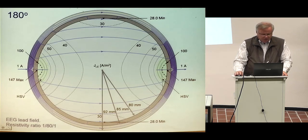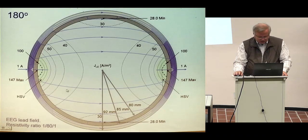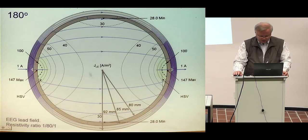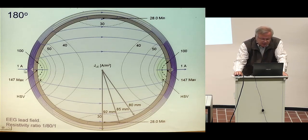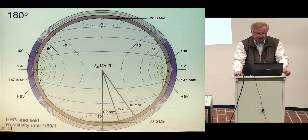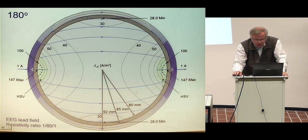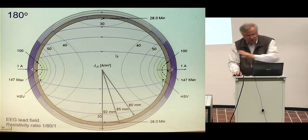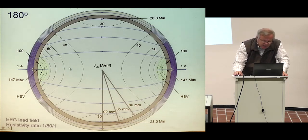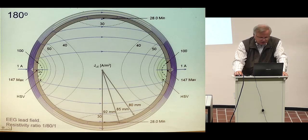We feed a unit current and find out what is the current density throughout the model, and the measurement sensitivity is exactly described by the current density. You learn that there is a very high current density in the scalp region, indicating very high EEG measurement sensitivity on the scalp, and much lower in the brain region — more or less linearly proceeding. The measurement sensitivity is about 35 in the center, increasing to 147 — the maximum — just under the electrode.